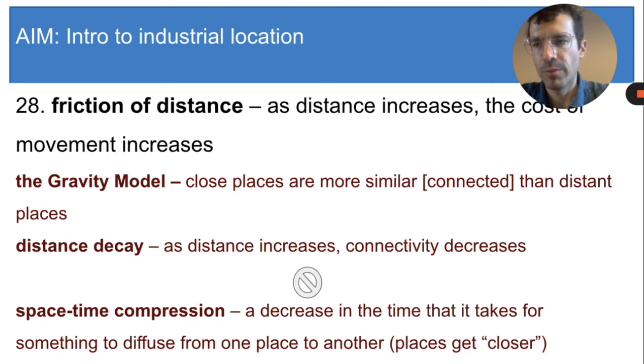However, you may remember that because of something called space-time compression, both the gravity model and distance decay are becoming less and less true. The same applies to friction of distance. So space-time compression contradicts the idea of friction of distance.